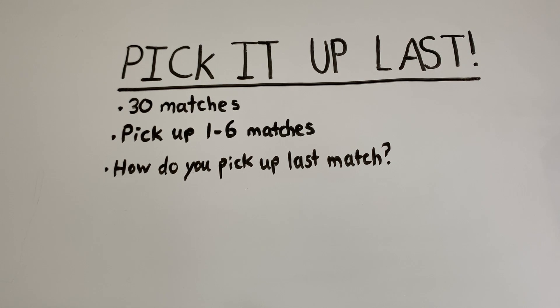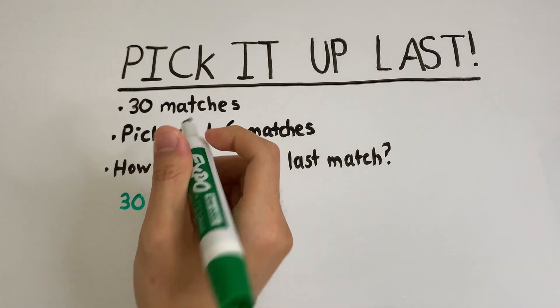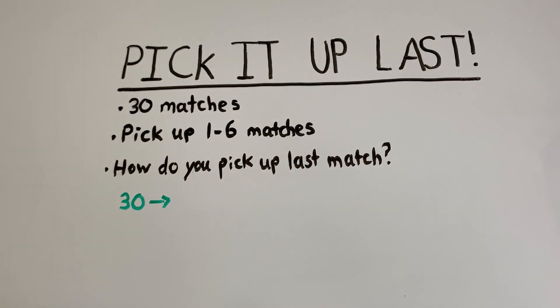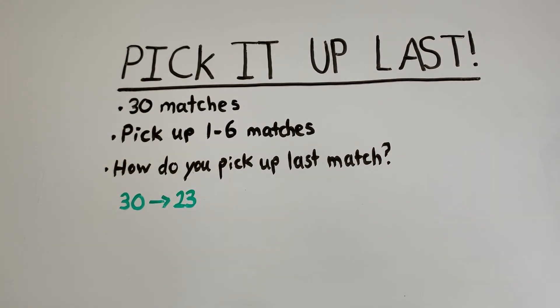And we're going to solve this by working backwards once again. So if we know that we need to pick up match number 30, well, what happens if we leave our friend 7 matches? If we leave our friend 7 matches, then they can only pick up at most 6. So if there's 7 matches left, let's say they pick up 6, well, then we can pick up that last one. So we would have to pick up match number 23, so that they can pick at most match number 29, and then we can pick up match number 30.